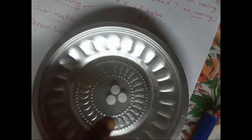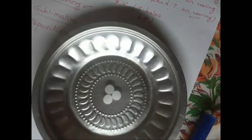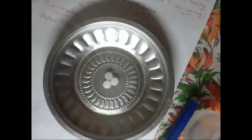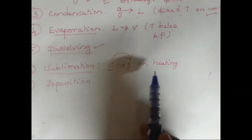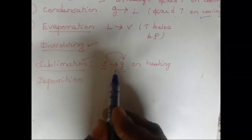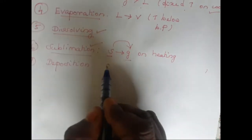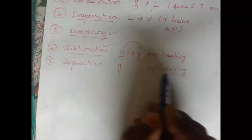I have taken camphor here. What is the state of this camphor? It is in solid state. Now I am going to heat this camphor. What will happen? It will change into gaseous state — the solid substance is directly changing into gas on heating, so this is nothing but sublimation. If I want to get this camphor back, I need to cool the gas. When I cool this gas, it will change into solid again. This process is called deposition.